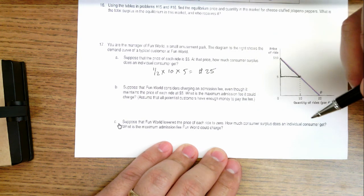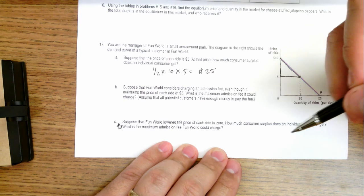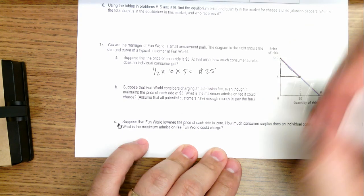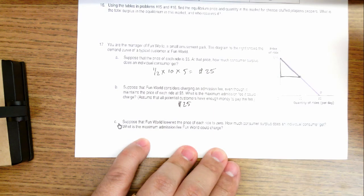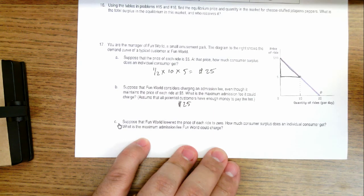So if you're going to charge an admission fee, you would charge a maximum fee of up to whatever the consumer surplus would be. In this case, that would be $25 because people are getting essentially $25 worth of free entertainment.